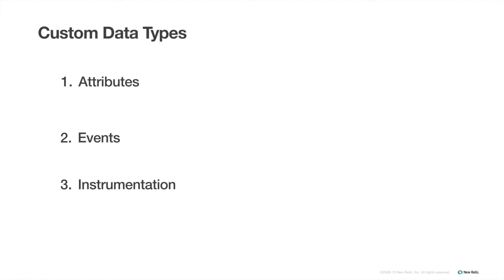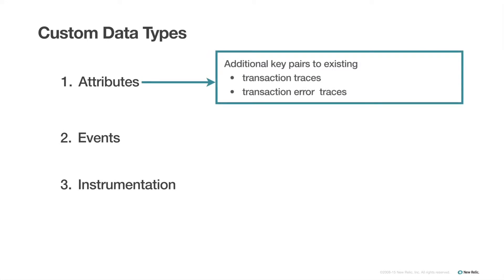There are three different types of custom data I can send to New Relic using the APM Agent API. I can add custom attributes to existing transaction traces and error traces. Adding custom attributes adds additional key-value pairs to existing transaction trace and error trace data in APM.